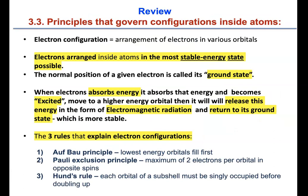Let's review. Electron configuration is the arrangement of electrons in various orbitals. Electrons are arranged inside atoms in the most stable energy state possible. The normal position of a given electron is the ground state. When electrons absorb energy, they become excited and move to higher energy orbitals, which is unstable, so they release the energy and come back down as electromagnetic radiation.